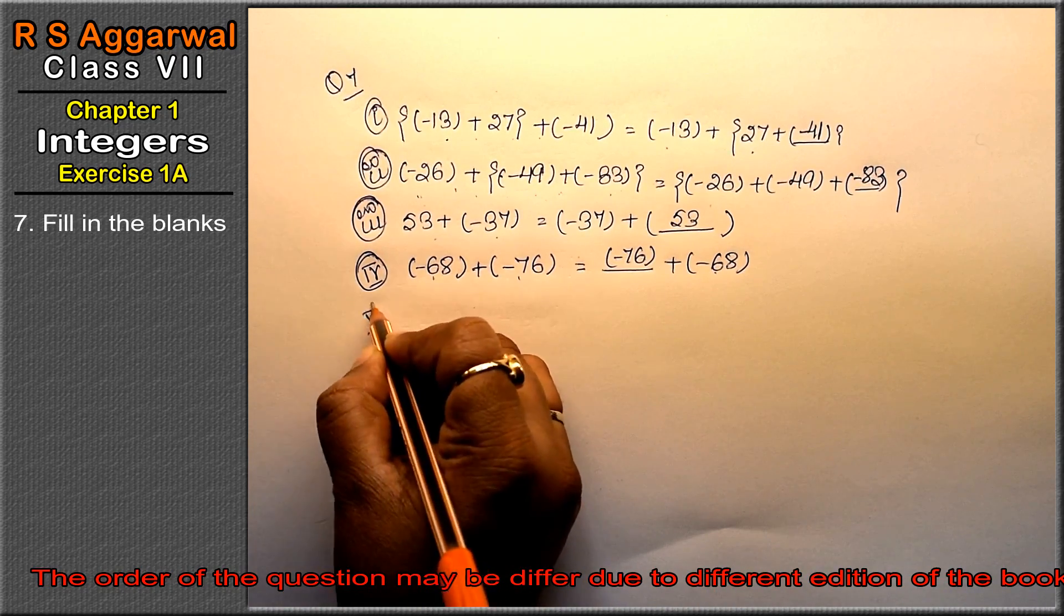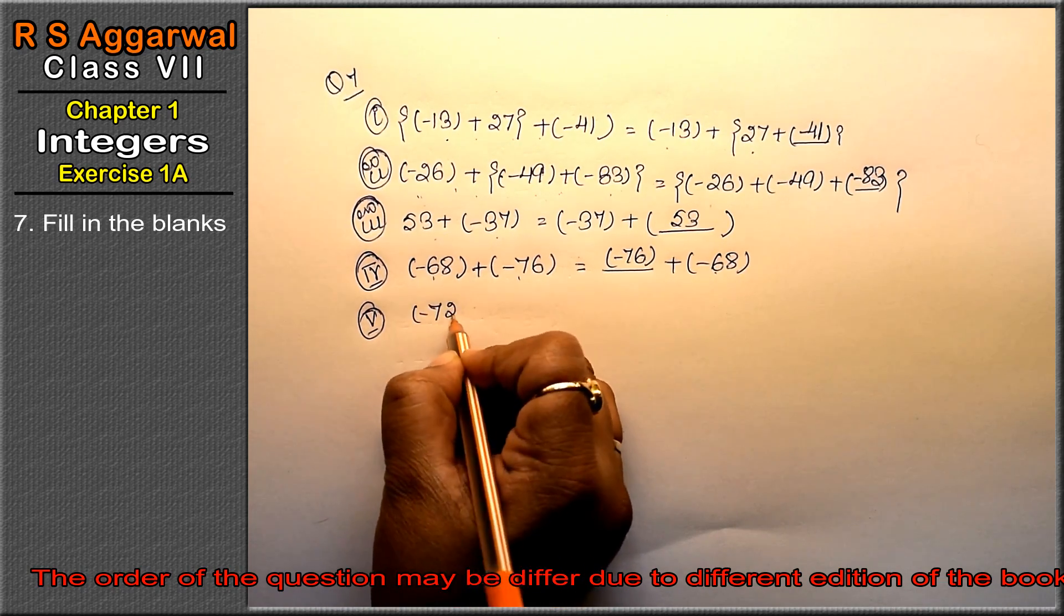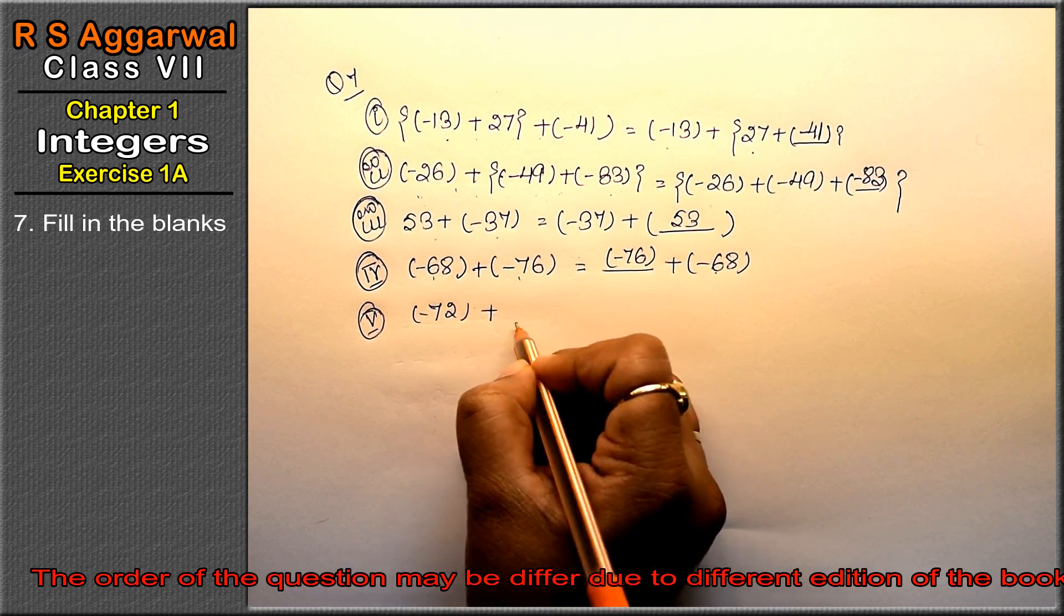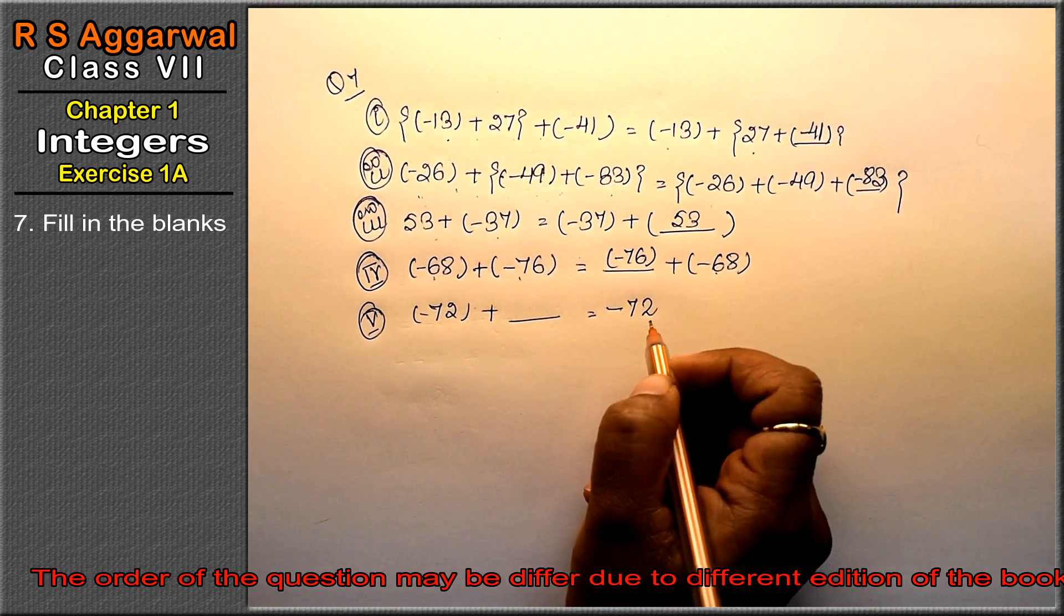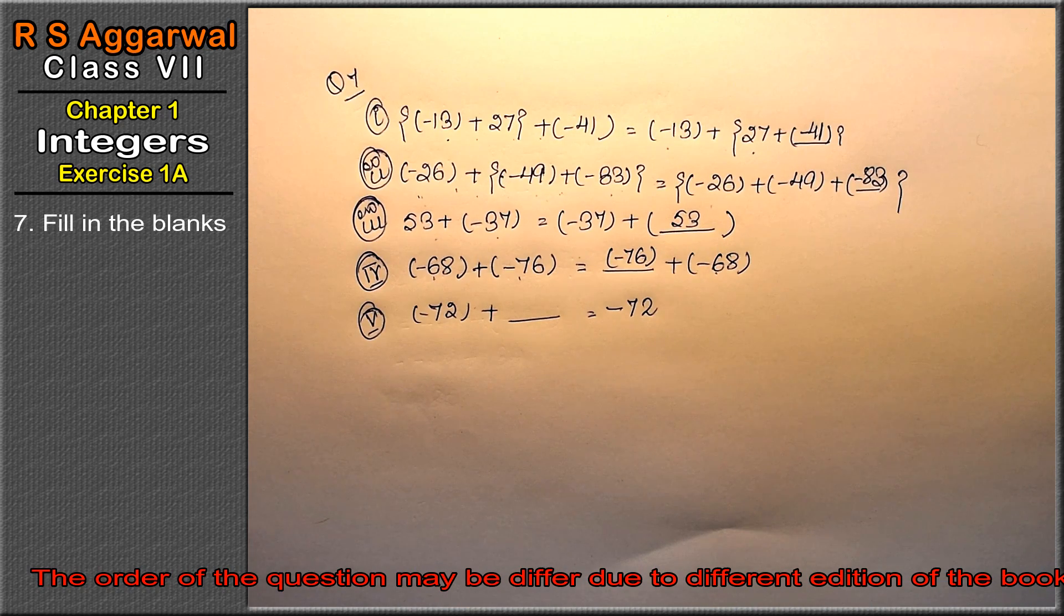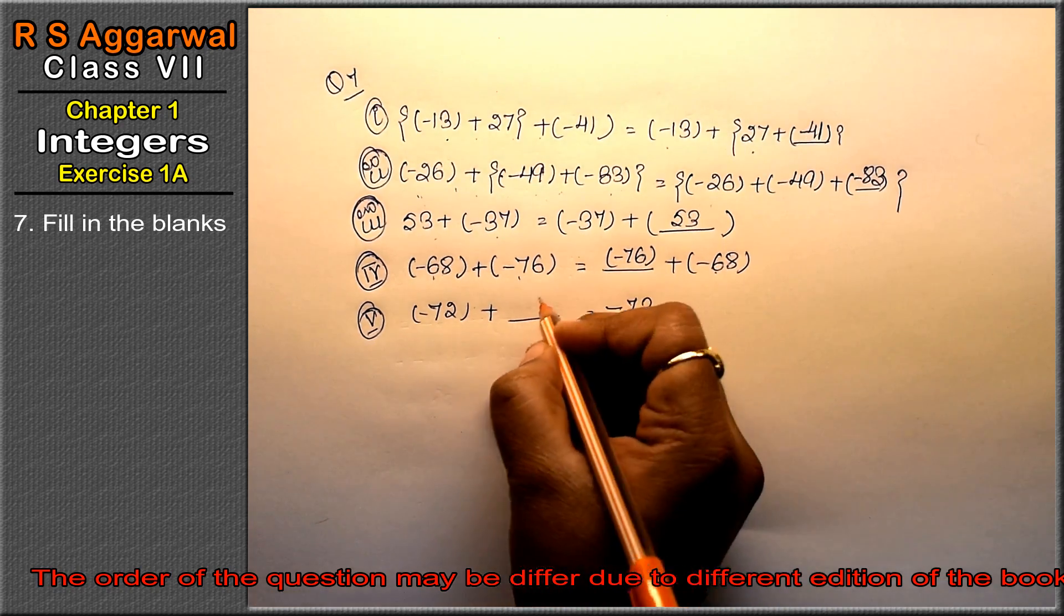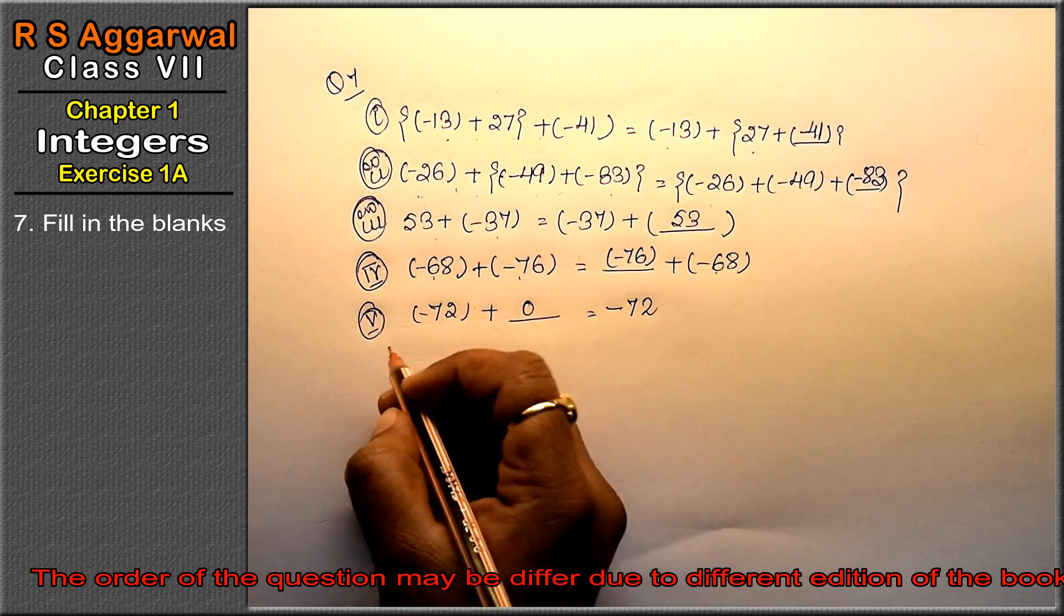Fifth part: minus 72 plus dash equals minus 72. This is our existence of additive identity. If we add any number with zero, then it will come as the same number.